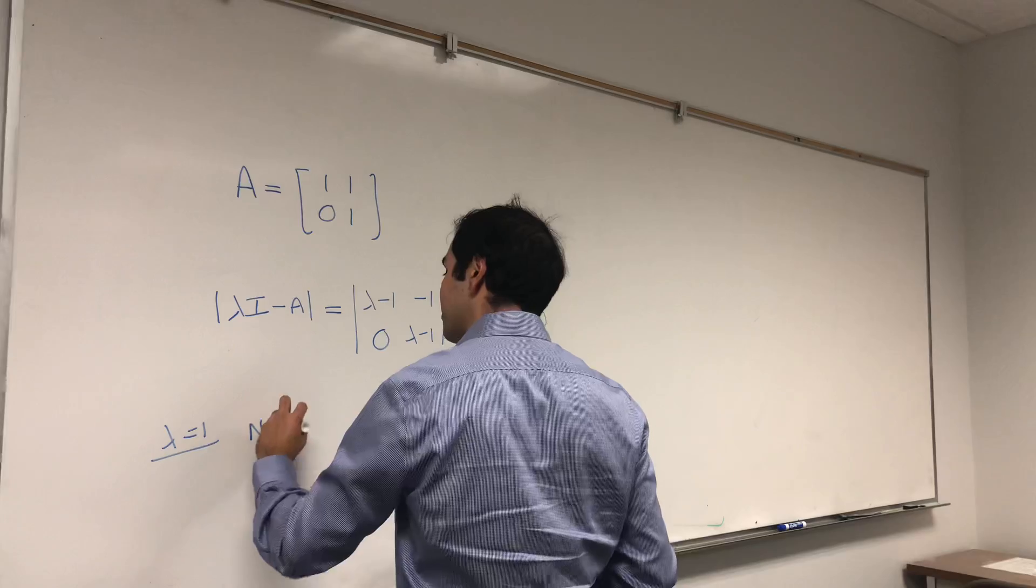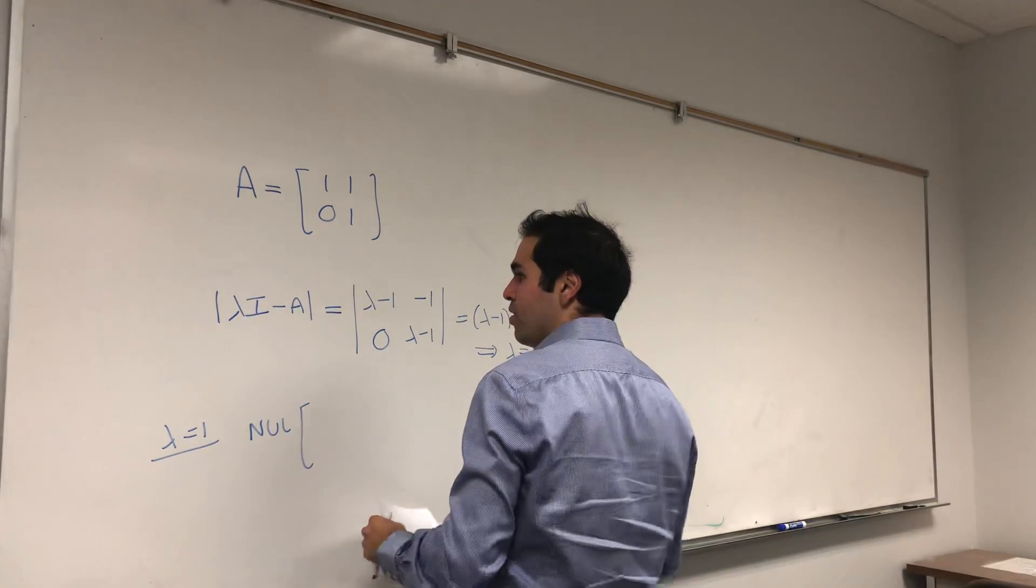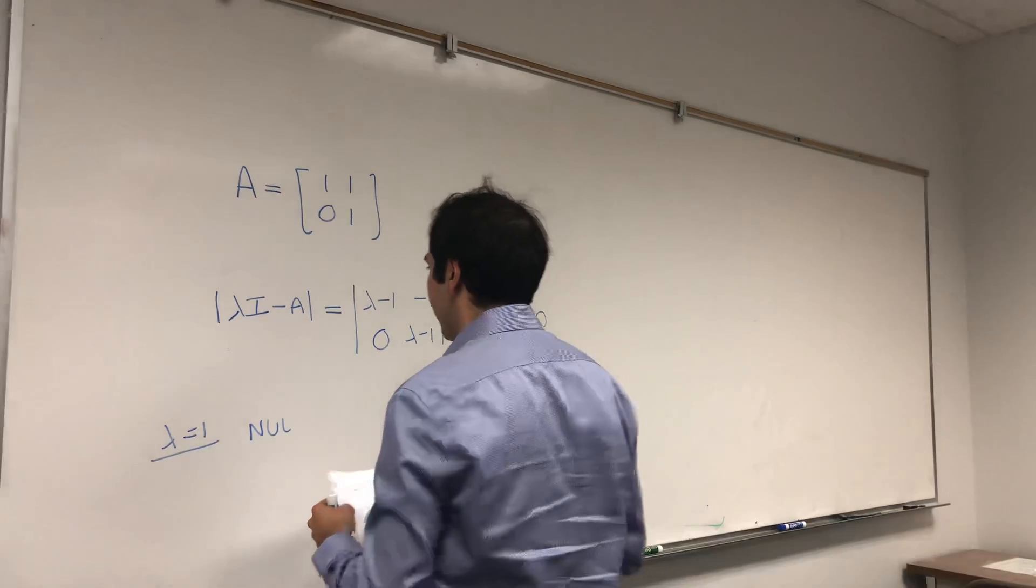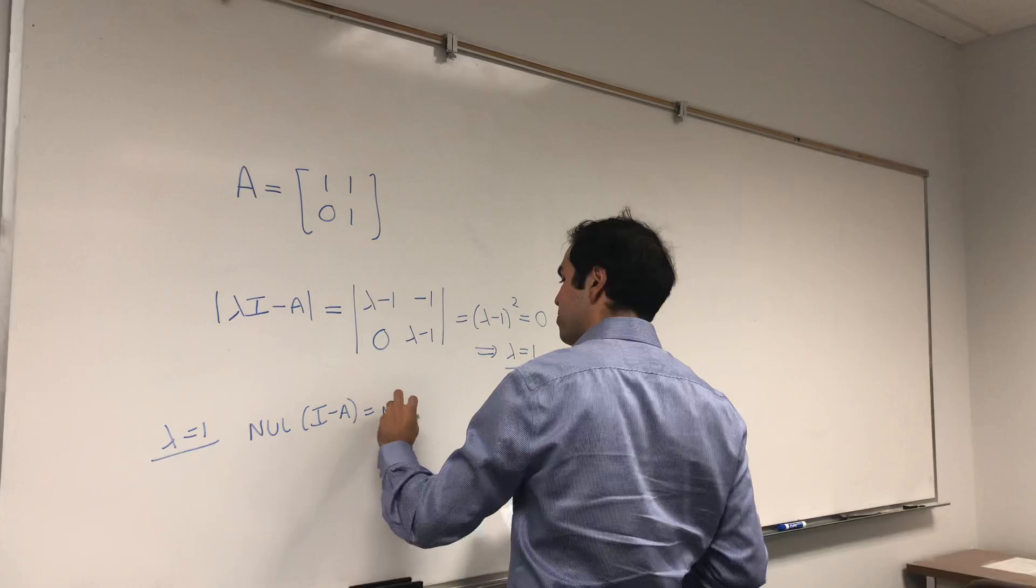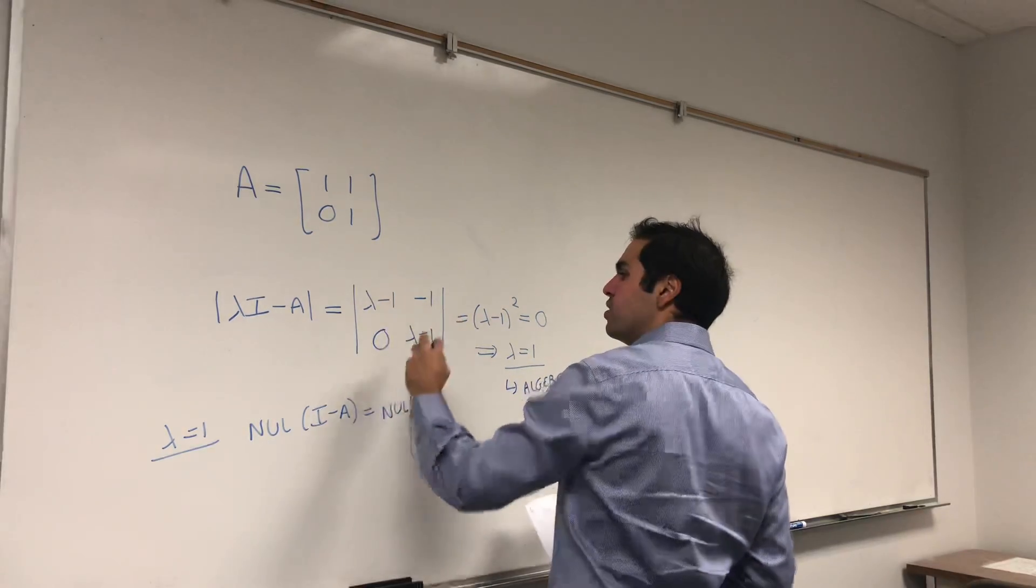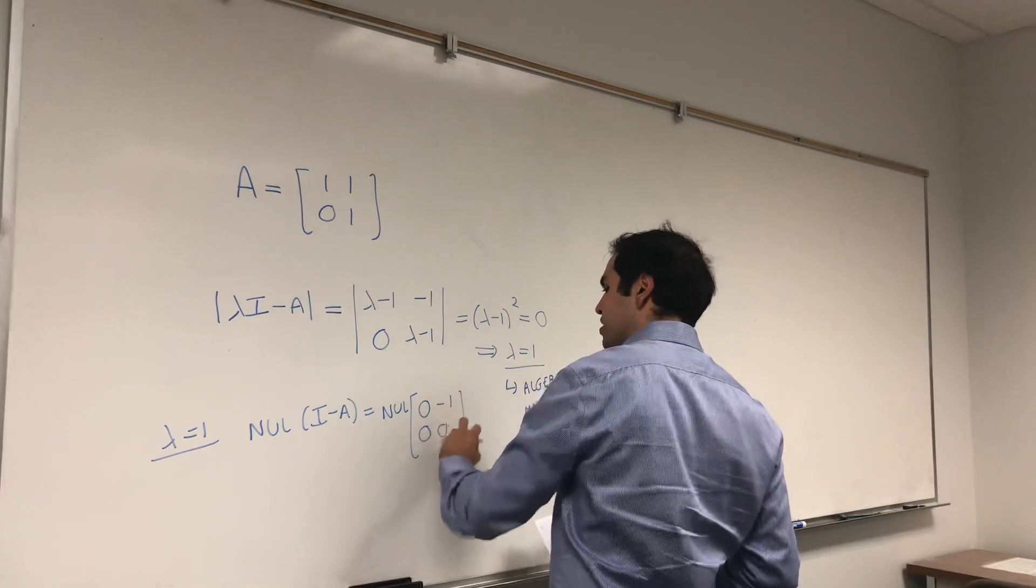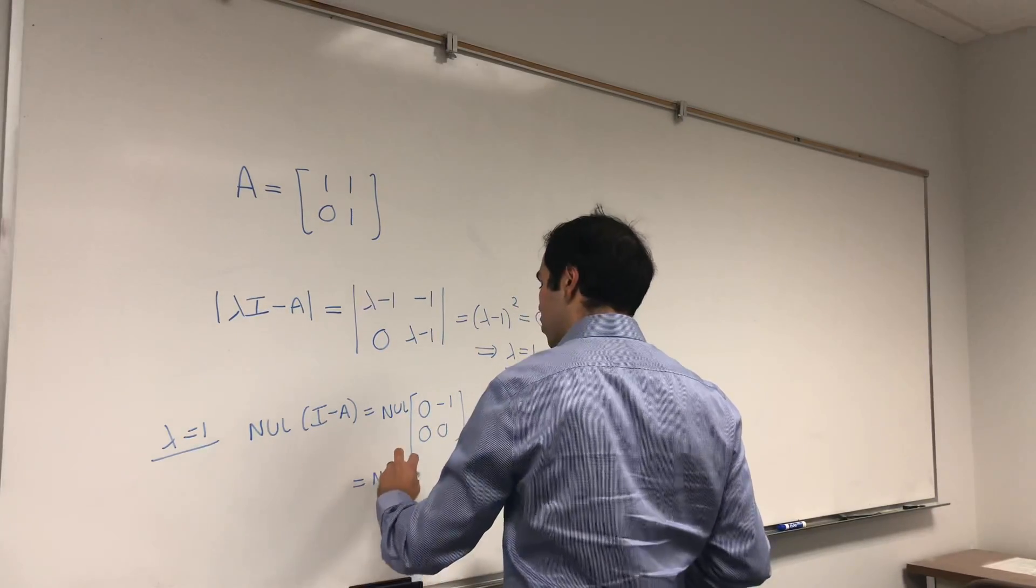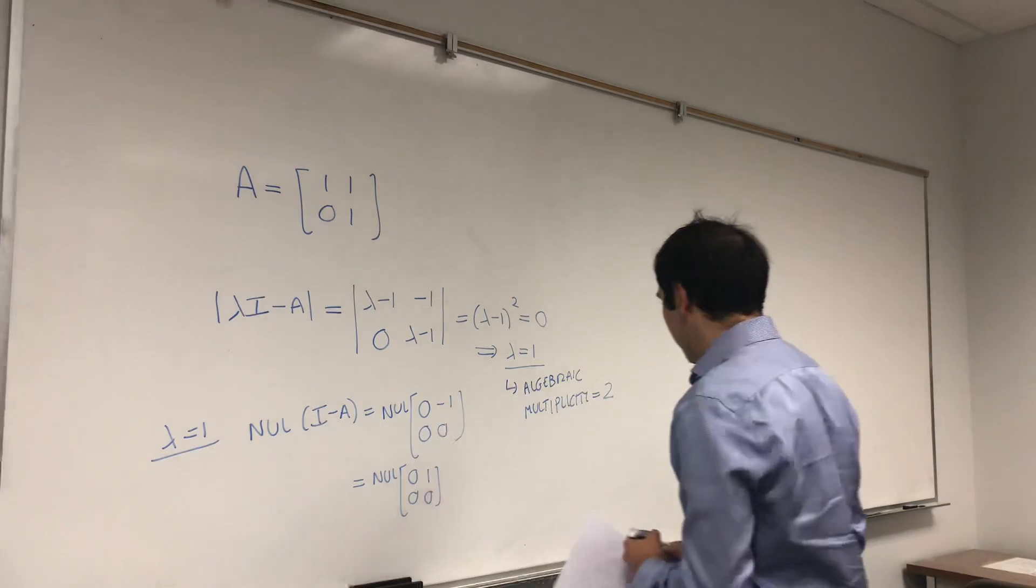So let's look at the null space of I minus A. Null space of I minus A, which is the null space of, you just set lambda equals to 1 here. So 0 minus 1, 0, 0, which is just the null space of 0, 1, 0, 0.